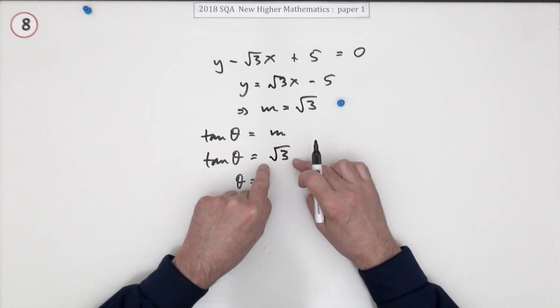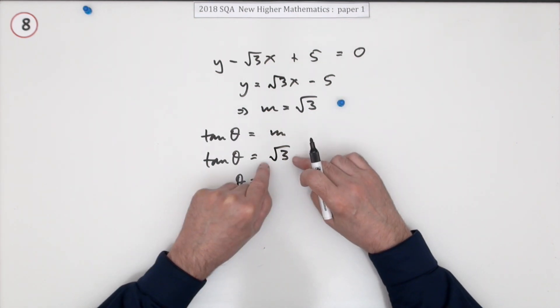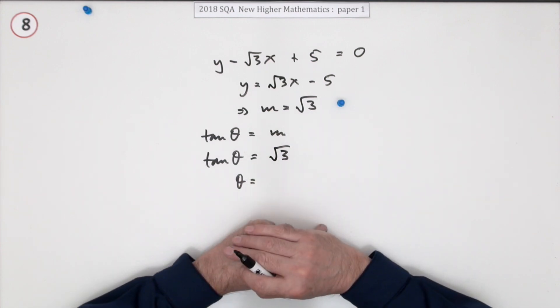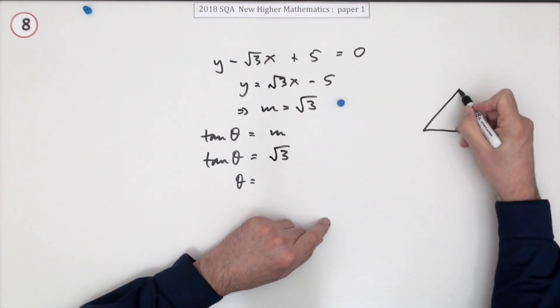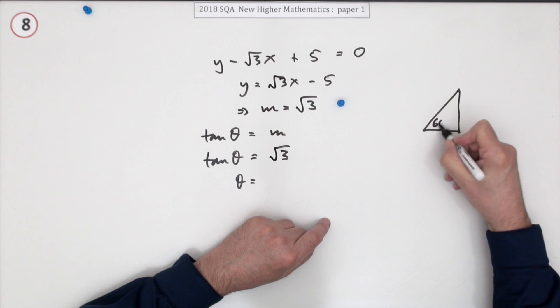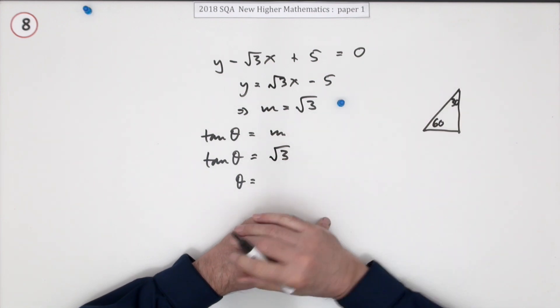So that means now because it's paper one, no calculator, you're going to have to recognize which of those triangles was it. Was it the 45 or was it the 30-60 that had the root 3 in it? I'll just draw that one again. It was the 30-60 because the 45 triangle had them both the same root 2s.